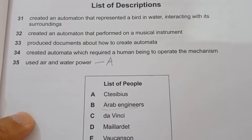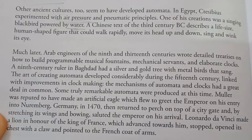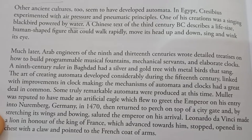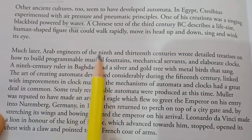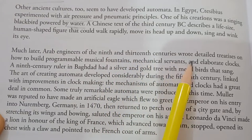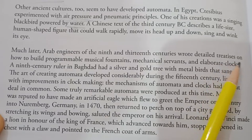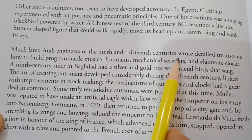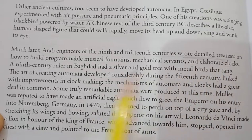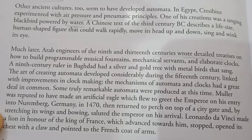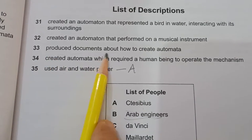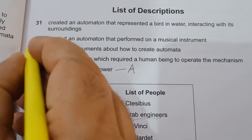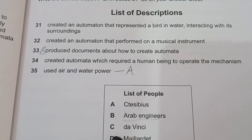The next persons are Arab engineers (B). In the passage: 'Arab engineers of the 9th and 13th centuries wrote detailed treatises on how to build programmable musical fountains, mechanical servants, and elaborate clocks.' So they wrote detailed documents. Looking at Statement 33: 'Produced documents about how to create automata.' That matches, so the answer to Question 33 is B.